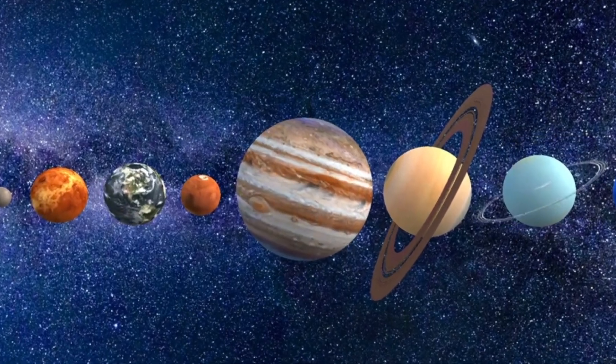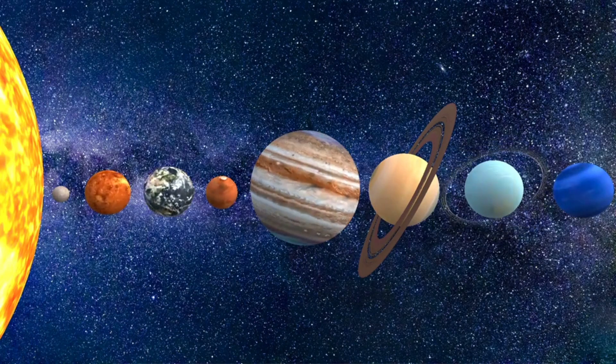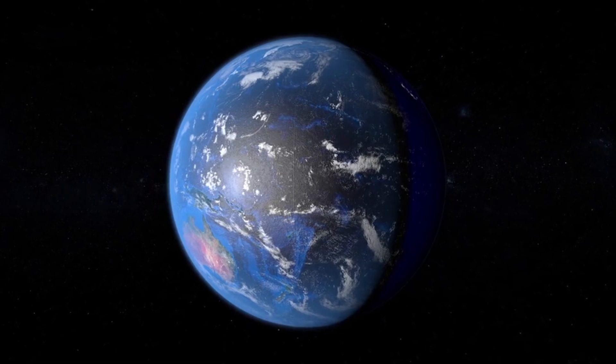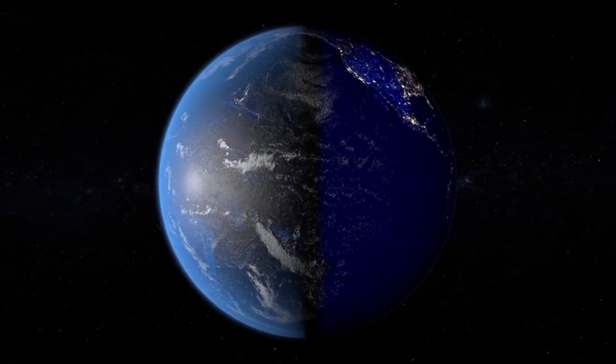Earth is a giant spinning ball, like a big marble floating in space. It spins around once every 24 hours, and that's what gives us day and night.